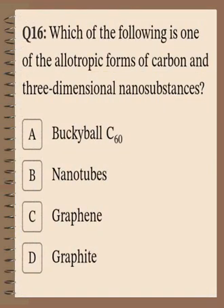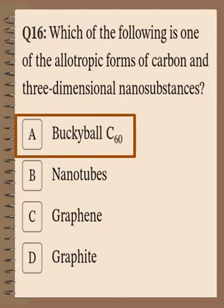Question number 16: Which of the following is one of the allotropic forms of carbon and a three-dimensional nano substance? Allotropic forms of carbon means different shapes or different properties of carbon. The answer, depending on the three-dimensional criterion, is buckyball or Carbon-60.